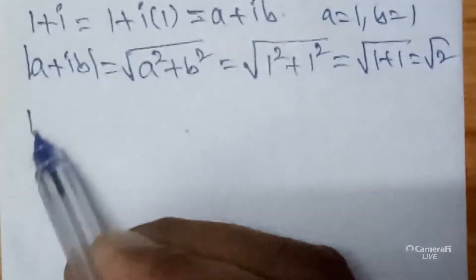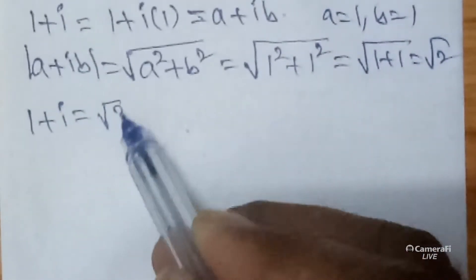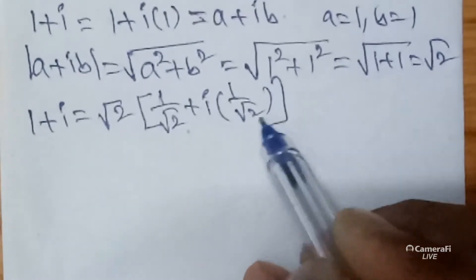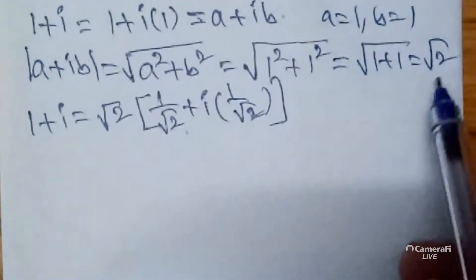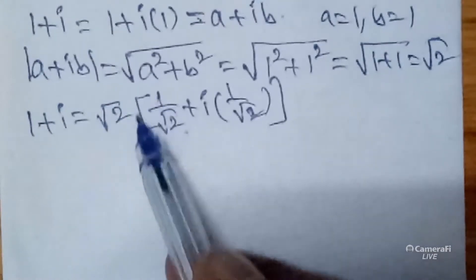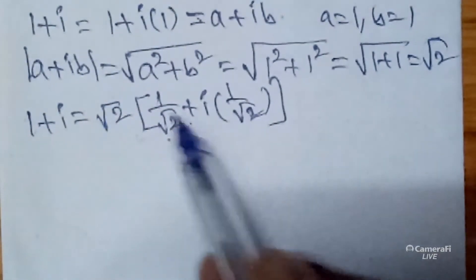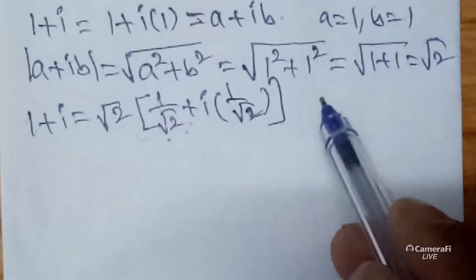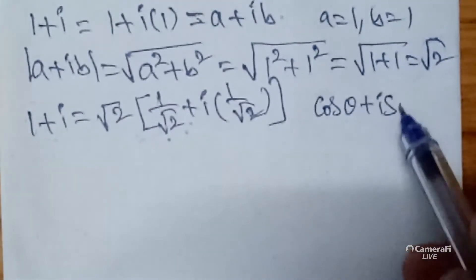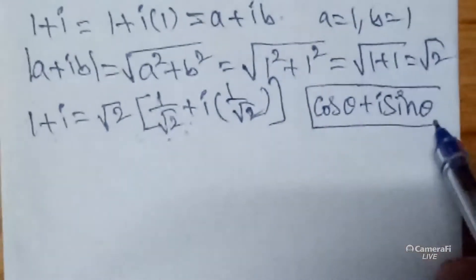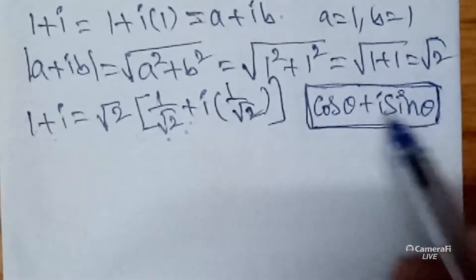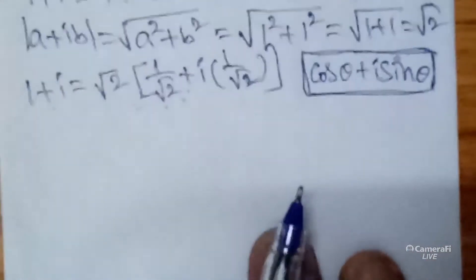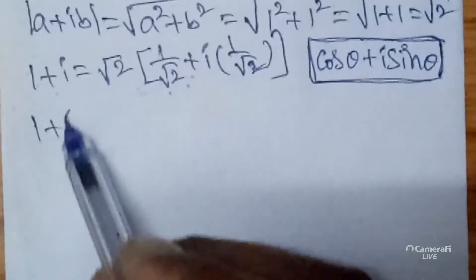So by using root 2, we multiply and divide here. Consider 1 plus i, multiplying outside by root 2 and dividing inside, so we get 1 by root 2 plus i into 1 by root 2. You can remember cos plus i sine, because by De Moivre's theorem we can use the concept cos theta plus i sine theta.